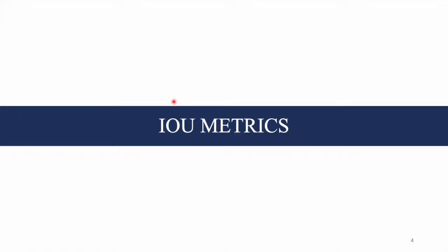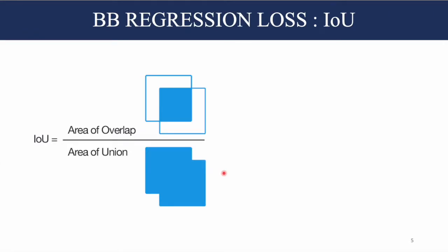This is going to be a short video on various IOU metrics used for object detection. The first metric is IOU, or Intersection over Union. If we consider one box as the ground truth bounding box and another as the predicted bounding box, their intersection is the area of overlap, and their union is the area of union. The IOU is the ratio of the area of intersection divided by the area of union.